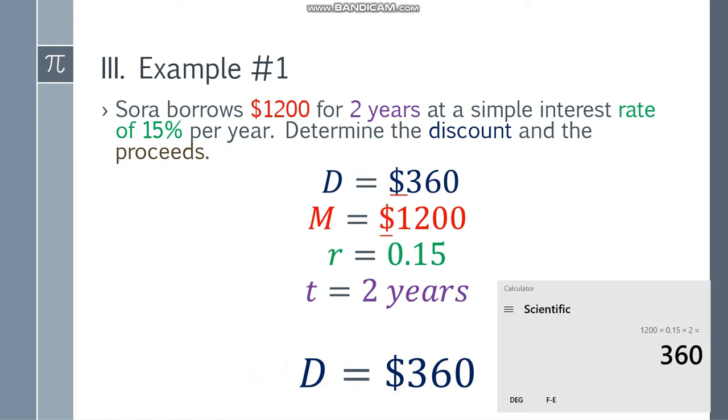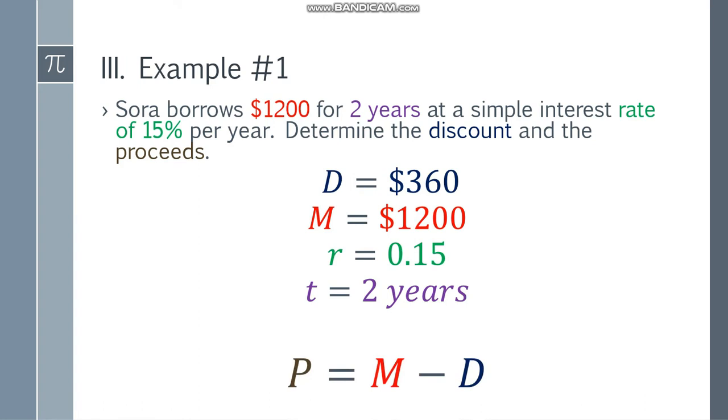How do we get the proceeds? The formula for proceeds is P equals M minus D. So P equals 1,200 minus 360. Using the calculator, the answer is $840. Our discount is $360 and our proceeds is $840.